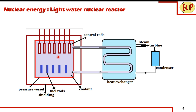The fuel rods, control rods, moderator, and coolant together make up the reactor core. All these are enclosed in a pressure vessel made of stainless steel, which can withstand the tremendous pressure of about 200 atmospheres generated inside. The pressure vessel has two openings for the inlet and outlet of the coolant, and openings at the top for lowering or raising the control rods.